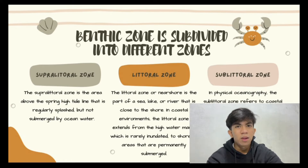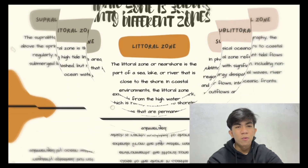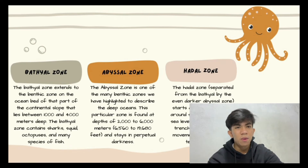The first one is the supralittoral zone — the beach or shore above the high tide line, influenced by ocean activities. The next one is the intertidal or littoral zone — the region from the high tide mark to the low tide mark. The next one is the sublittoral zone — from the low tide mark to the edge of the continental shelf. The next one is the bathyal zone, which covers the slopes and rises of the ocean floor, from 1,000 meters to 4,000 meters. It is also known as the midnight zone because of the lack of light.